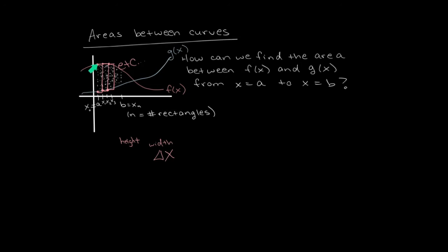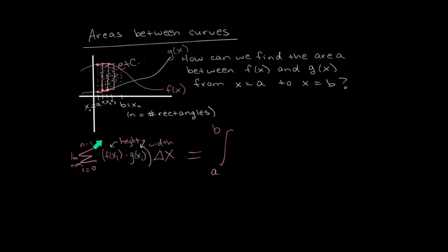What is the height from here to here? f of x minus g of x gives the height of the first rectangle. We add up all rectangles starting at i equals 0 and ending at n minus 1. To get the exact area, we take the limit as n goes to infinity. This is exactly a definite integral — the definite integral of f minus g — where Δx turns into dx after taking the limit.